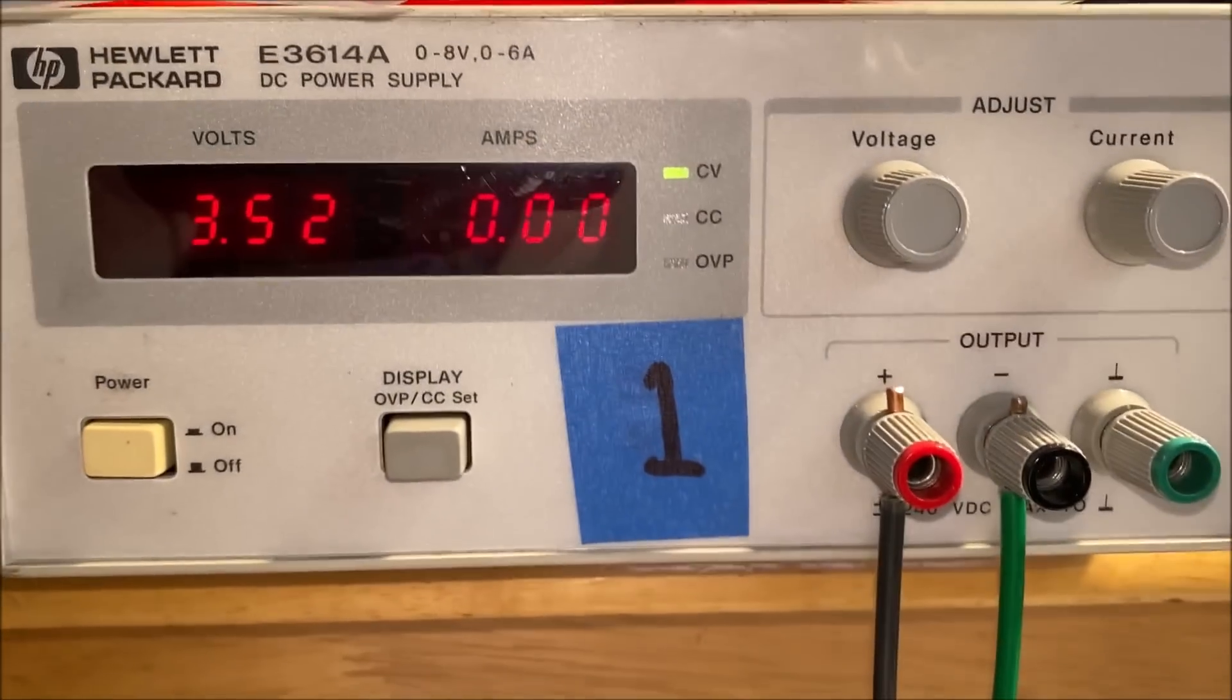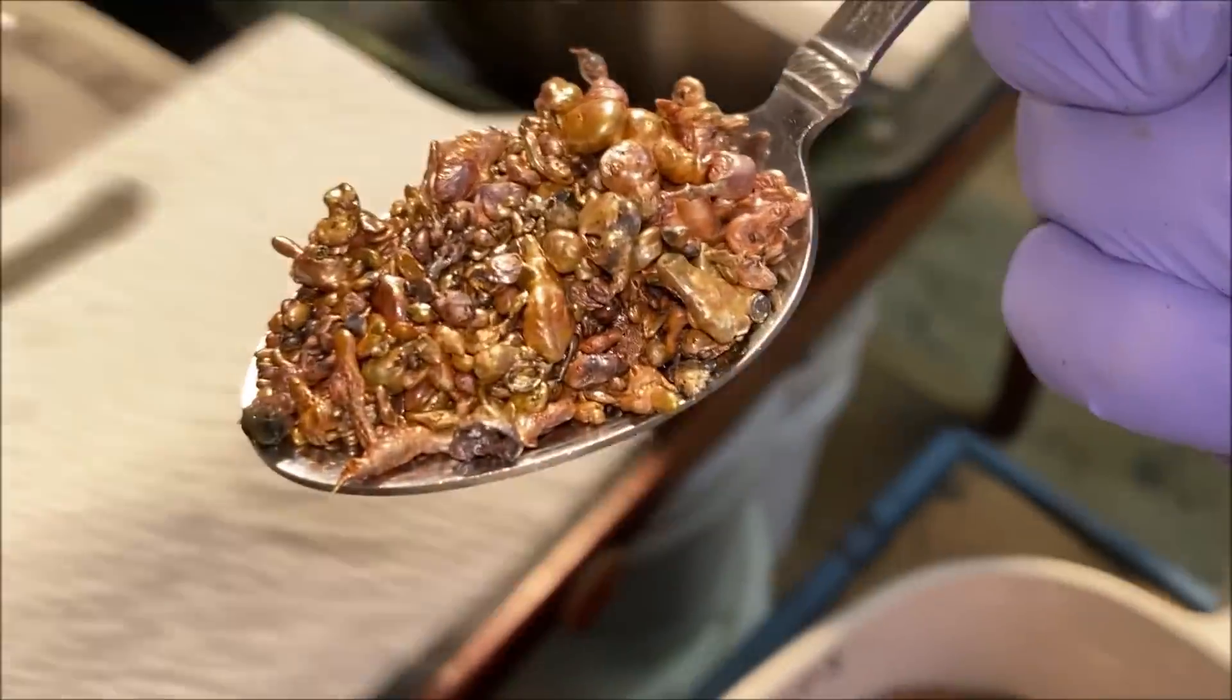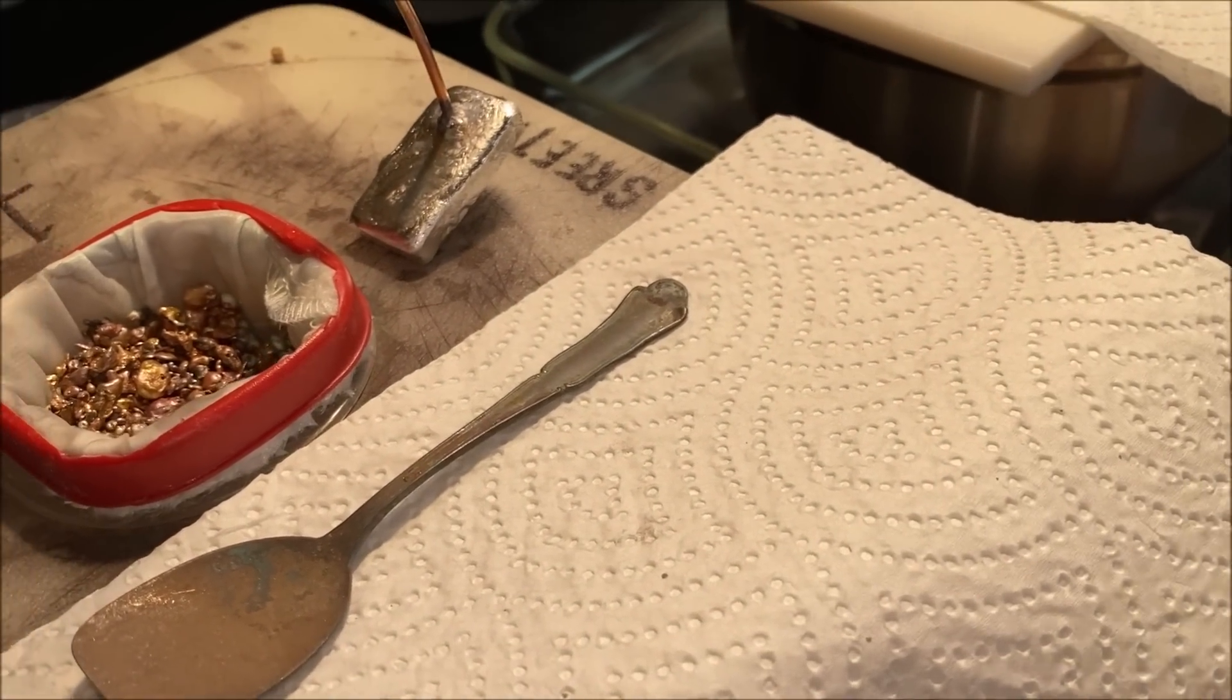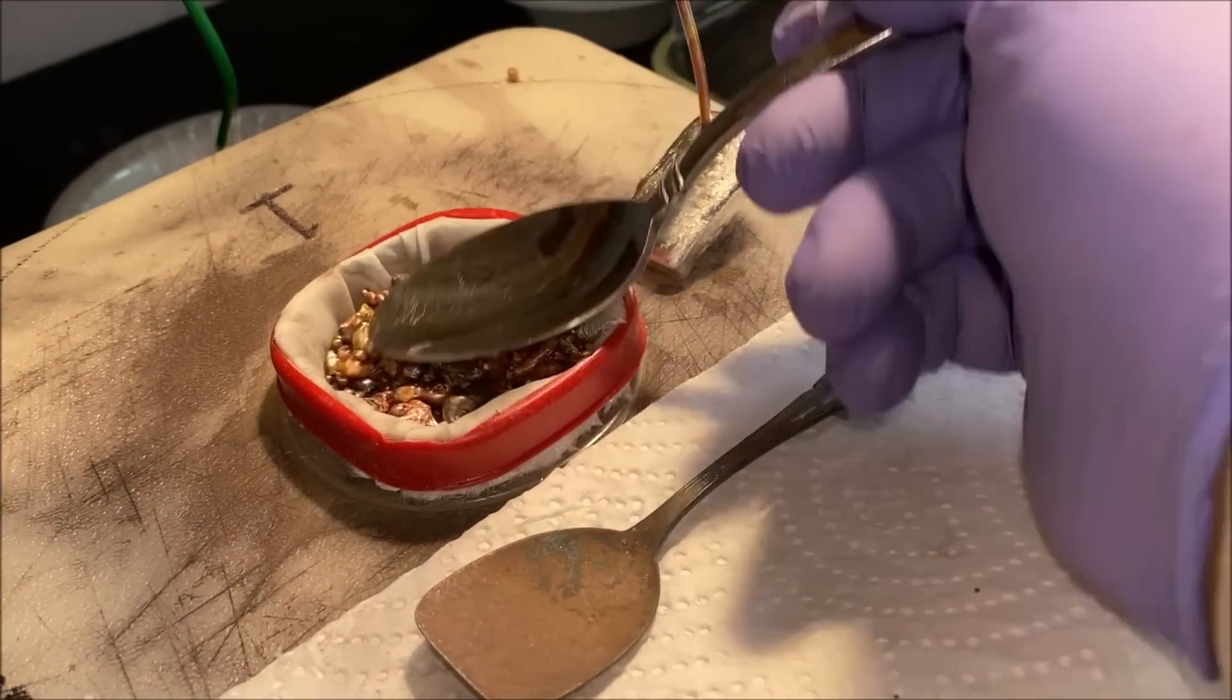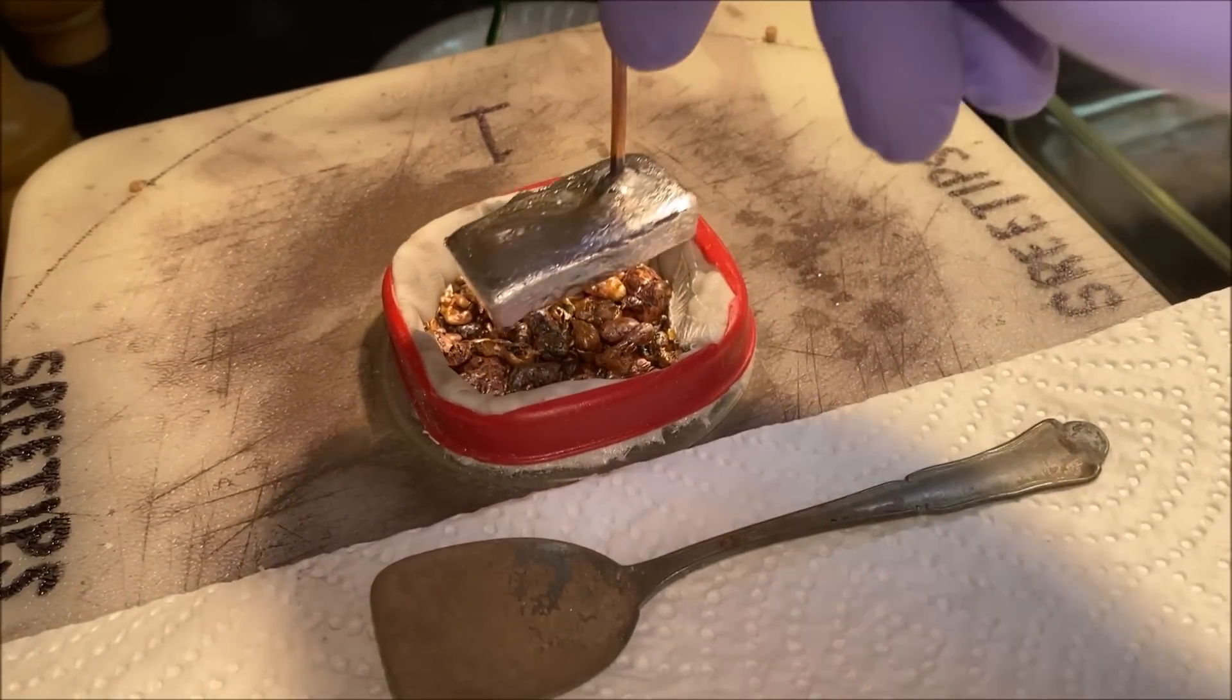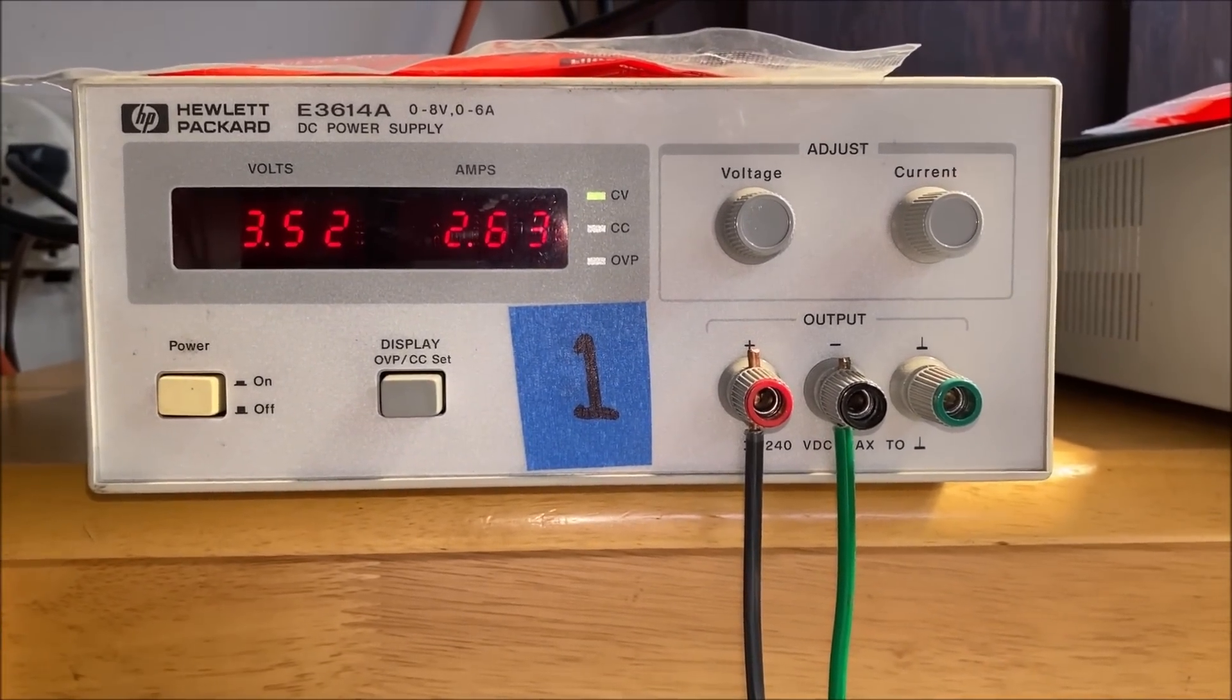I'm going to go ahead and pull this out. Of course the current flow goes to zero when I do that. Now we're going to add some additional silver in here. It took two big spoons to fill that thing back up. I'll put this back on the silver and now you can see the current flow is up to 2.6 amps.